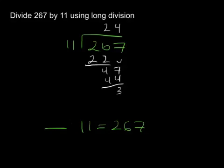And what does that mean? Well, that means that if I were to multiply 24 by 11, what would I get? I want you to think about that real quick. Well, I should get 264. Why is that?